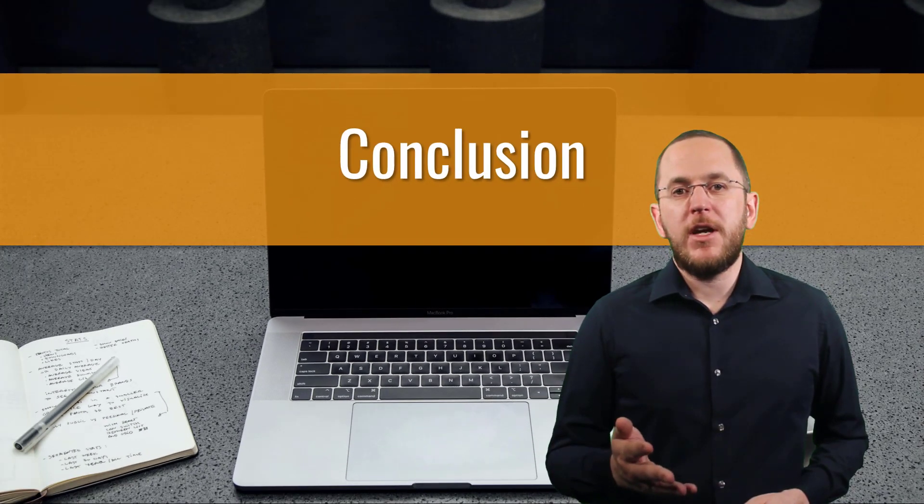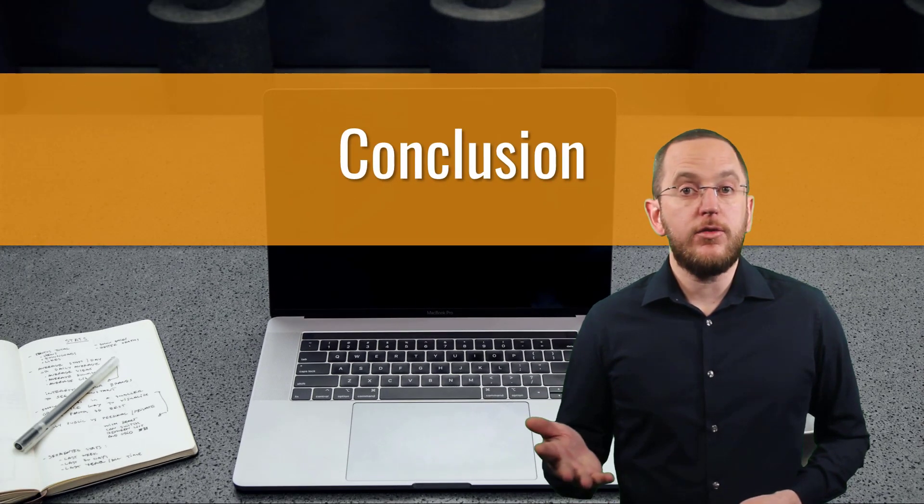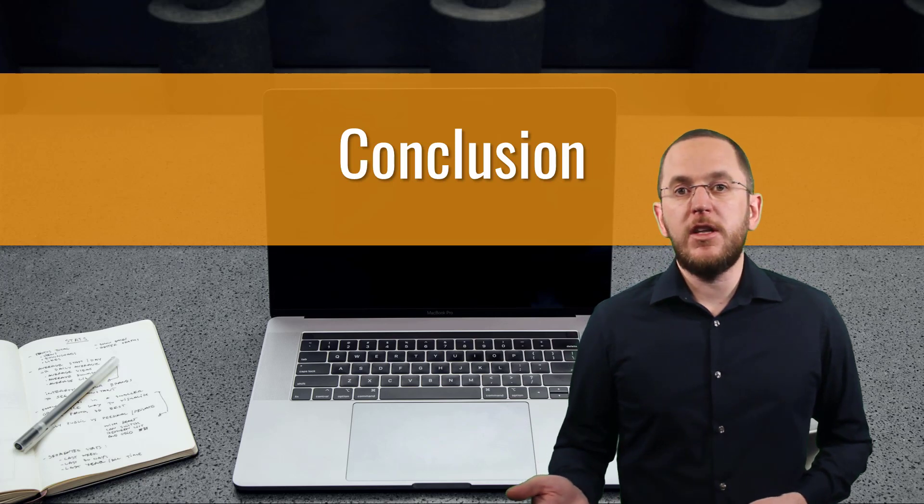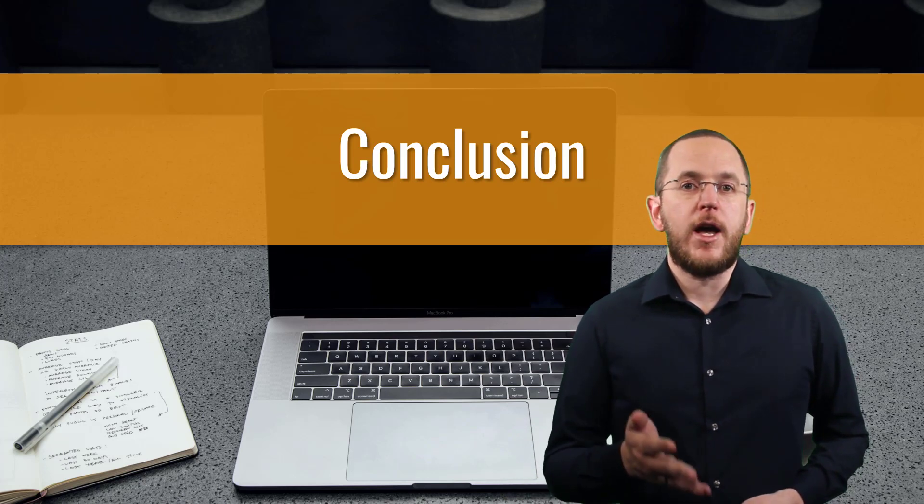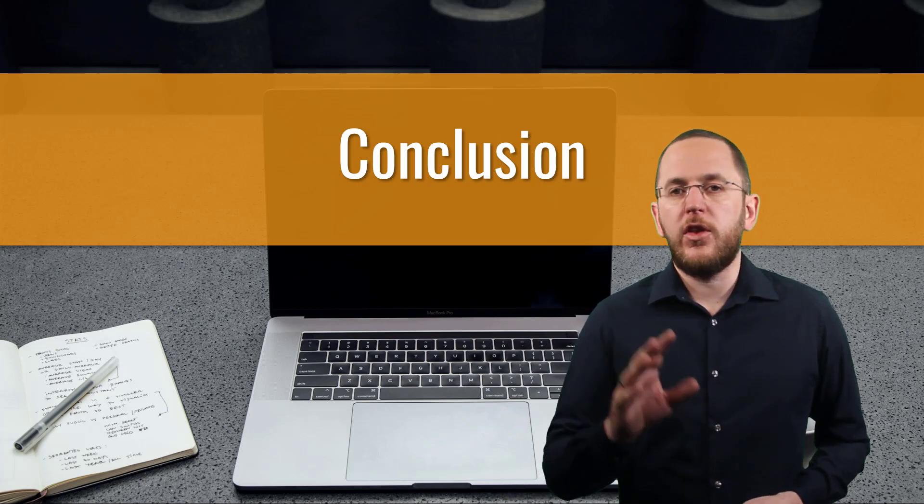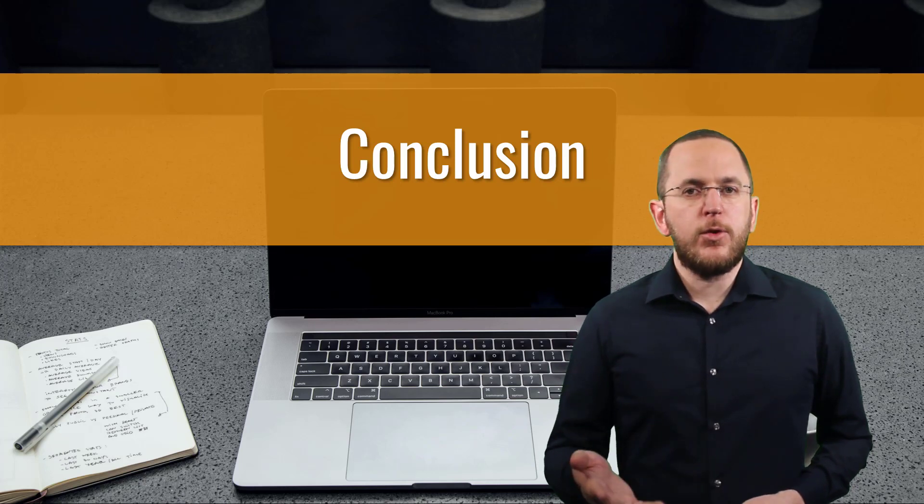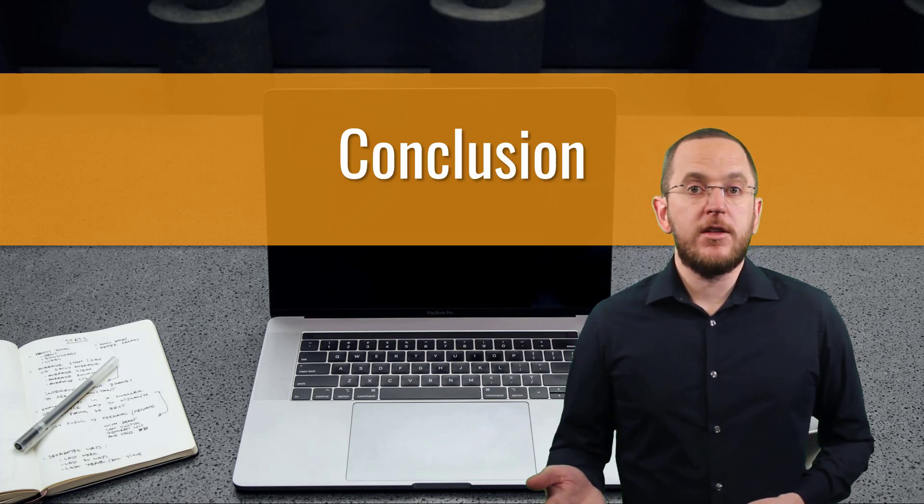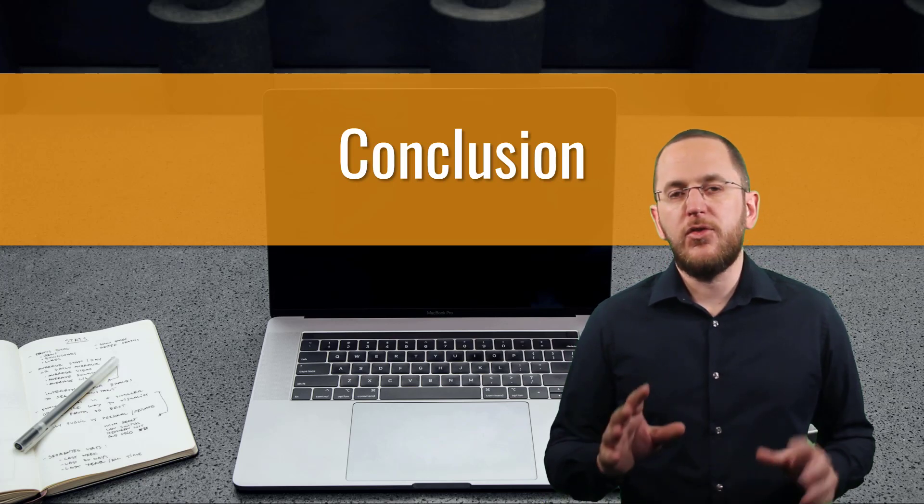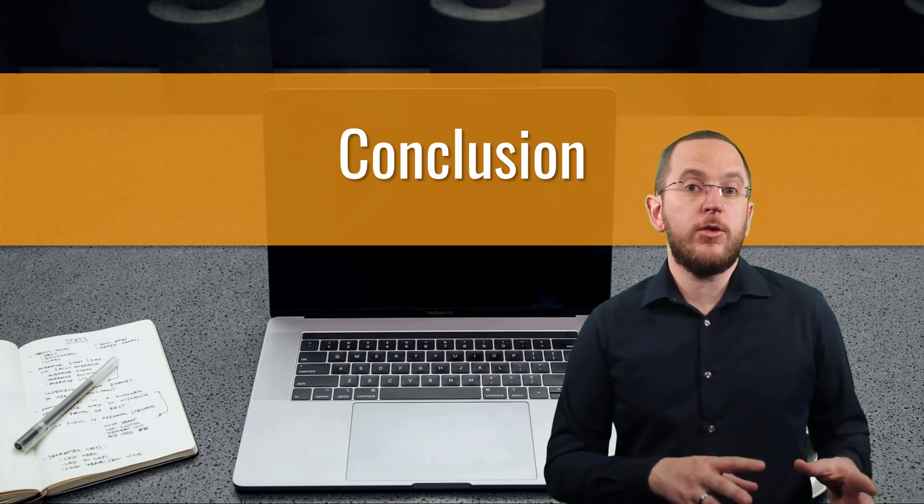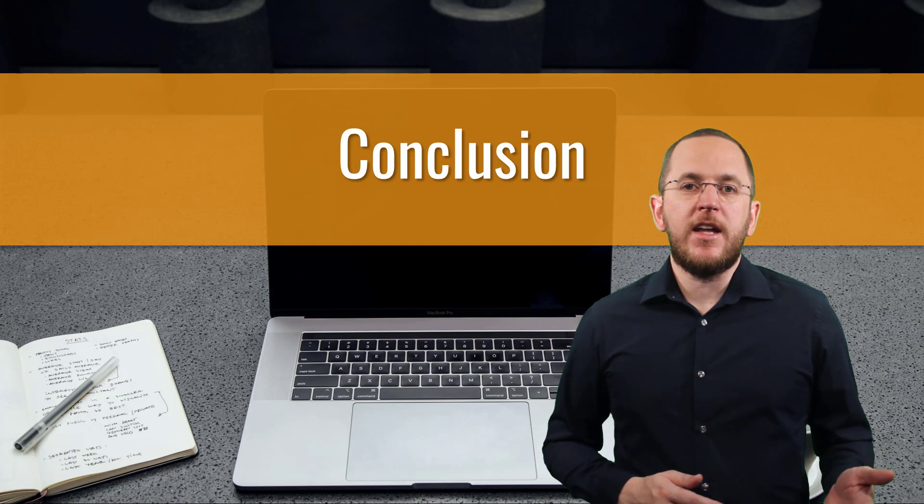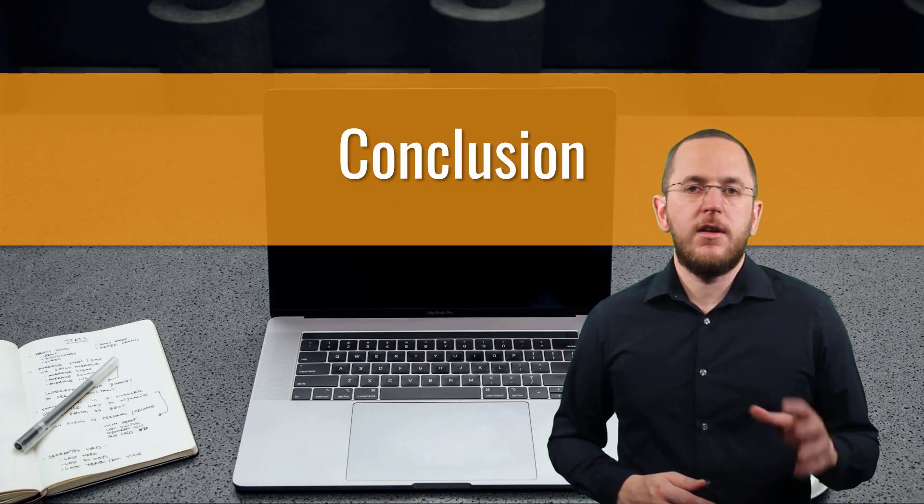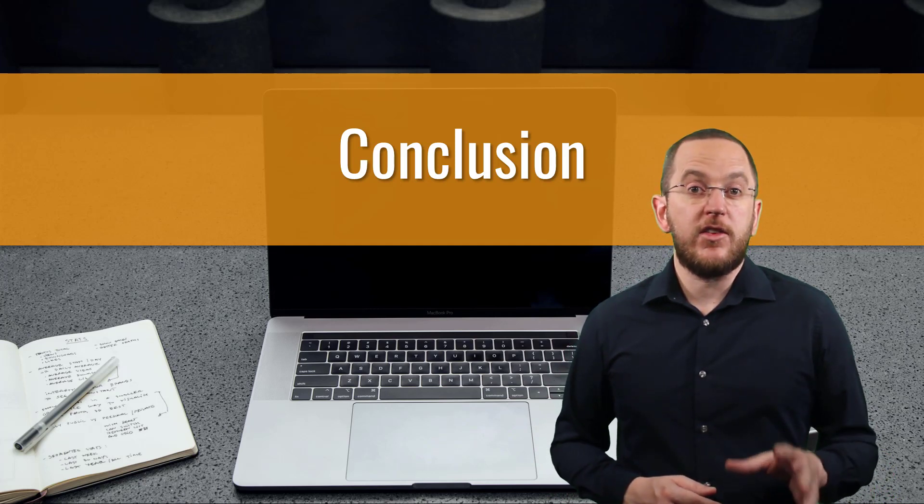When you call Spring Data JPA's save method, it has to decide if you provided a new entity object it needs to persist or if it has to update an existing database record. This process is called state detection. By default, Spring Data JPA checks if the entity object has a version attribute. If that's the case and the attribute's value is null, it considers the entity a new object.